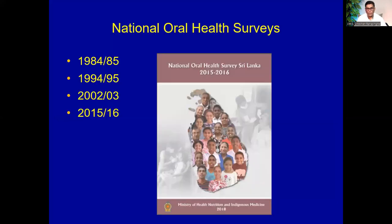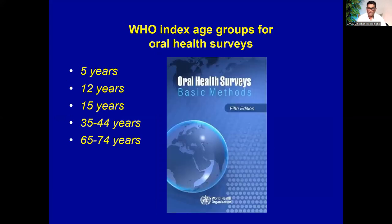A country's oral health level is measured by national level oral health surveys. Sri Lanka has performed four national oral health surveys with reports published. These surveys are done according to methods recommended by the World Health Organization, which recommends five index age groups to assess dental diseases and conditions, because dental diseases are highly age-related. The conditions in five-year-old children are entirely different from conditions in the 65 to 74 elderly group.